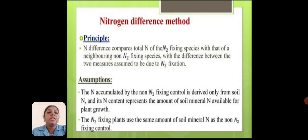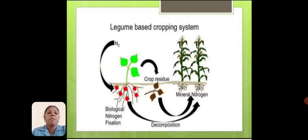Nitrogen difference method: total nitrogen of the N2-fixing species is compared with that of a neighboring non-nitrogen-fixing species, with the difference between the two assumed to be due to nitrogen fixation. Legume-based cropping systems are based on this type. Biological nitrogen fixation occurs at the root of the plant, and cropped residue then undergoes mineral nitrogen decomposition.